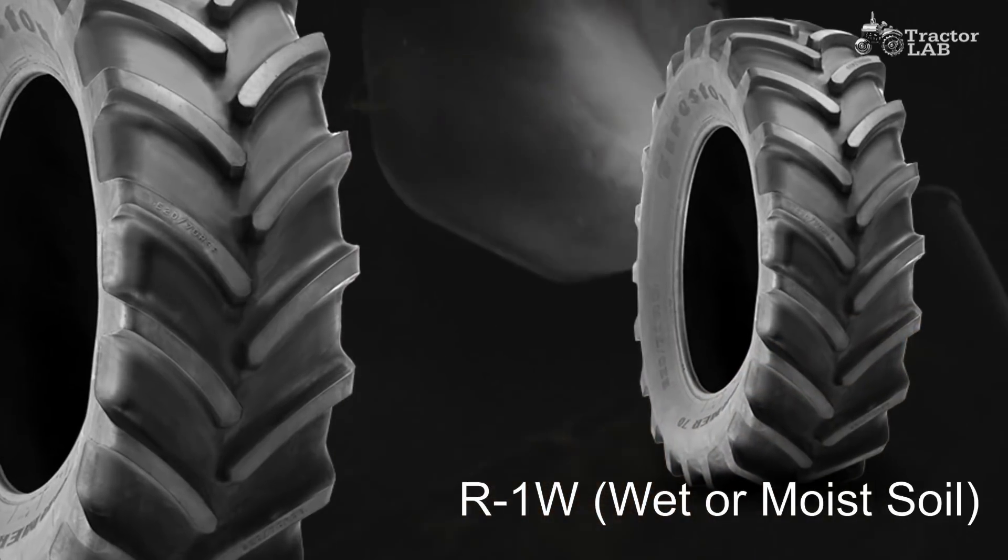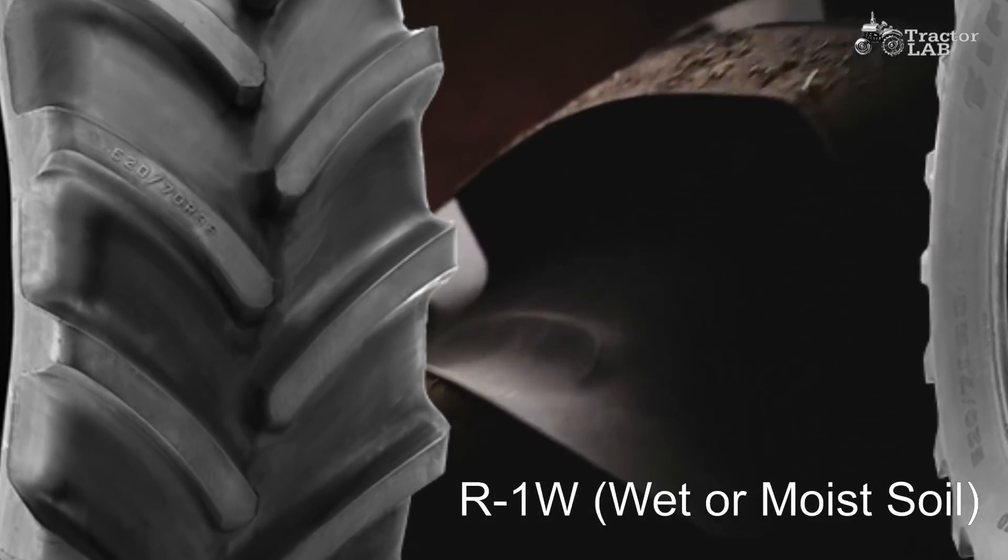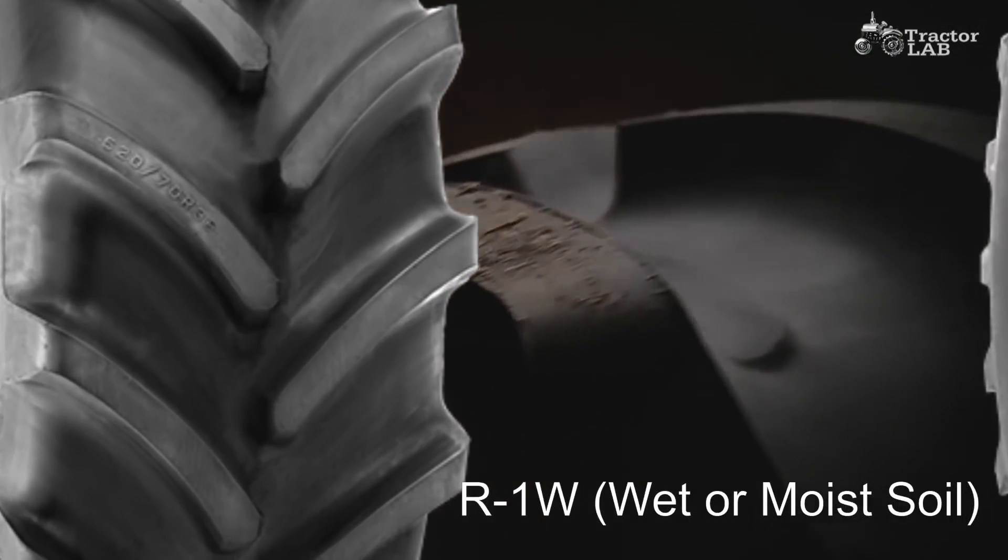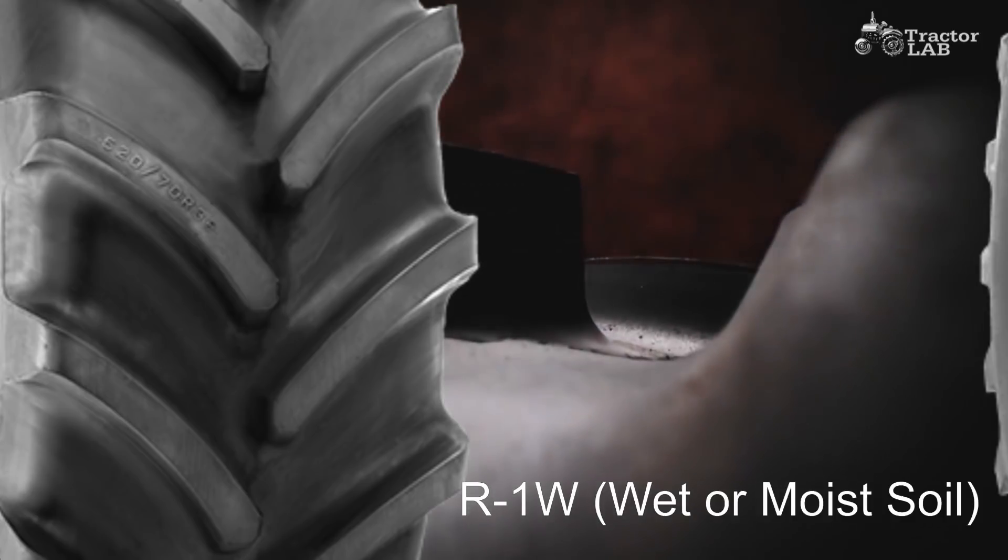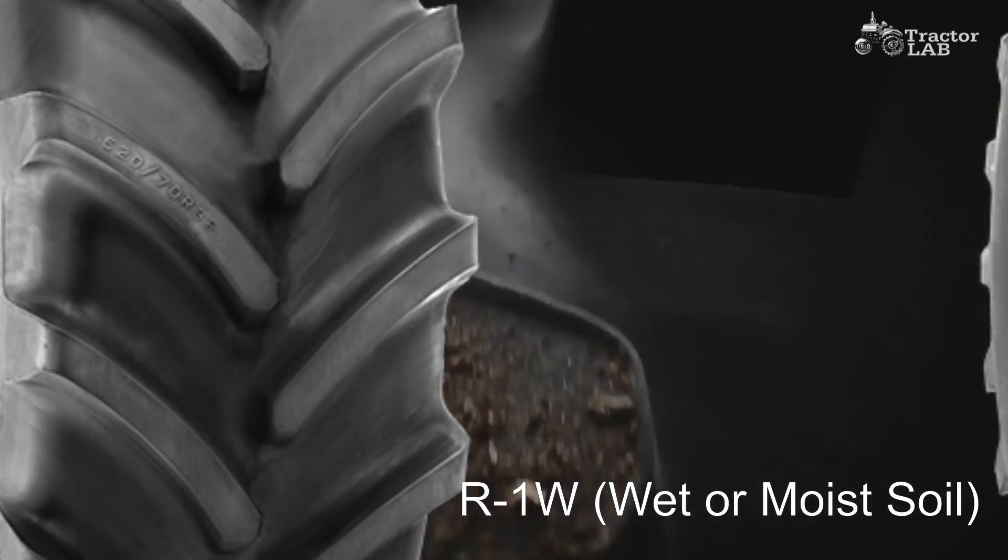R1W tires are defined as having 20% deeper tread depth than an equivalent R1 tire, but actually range from 15 to 35% deeper.